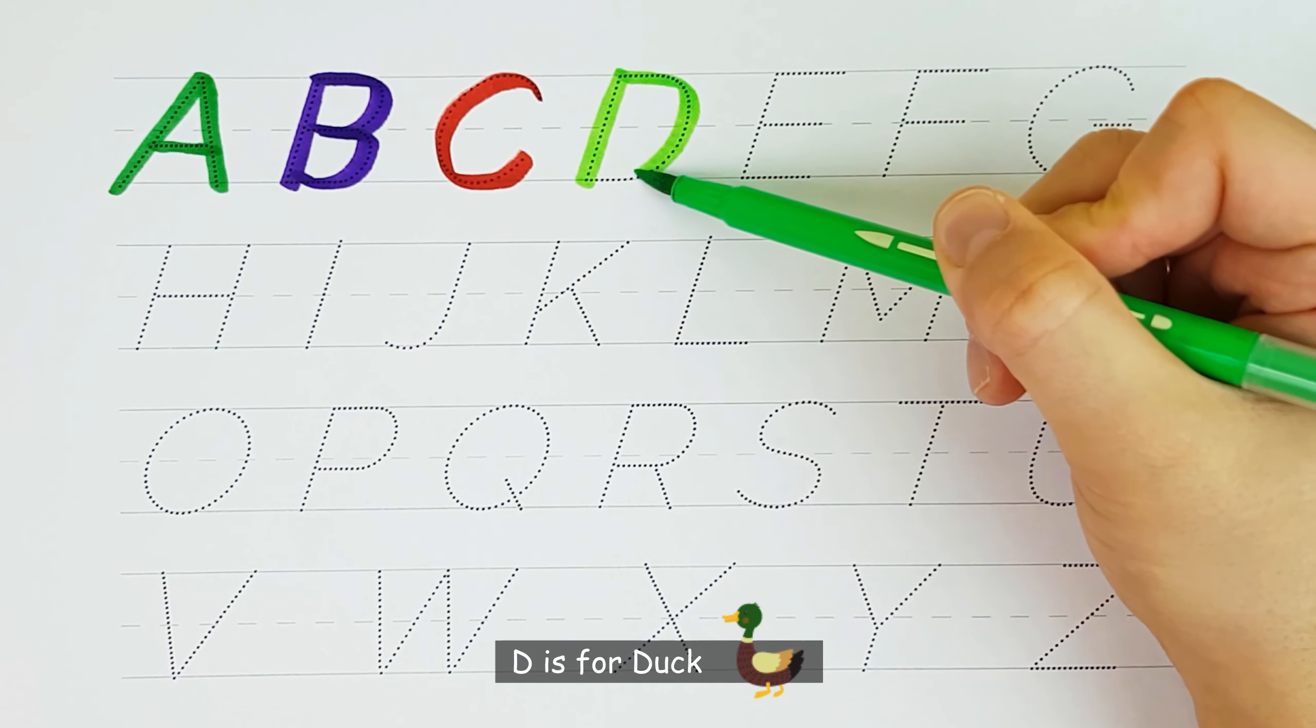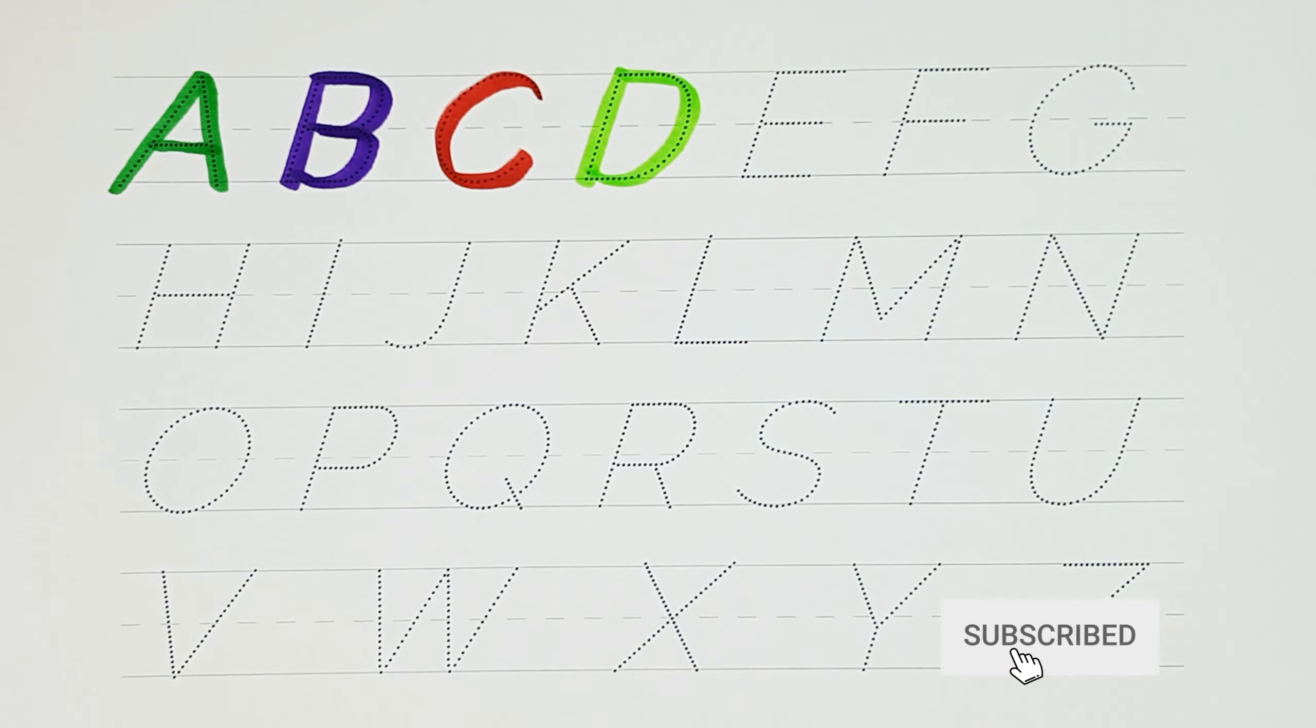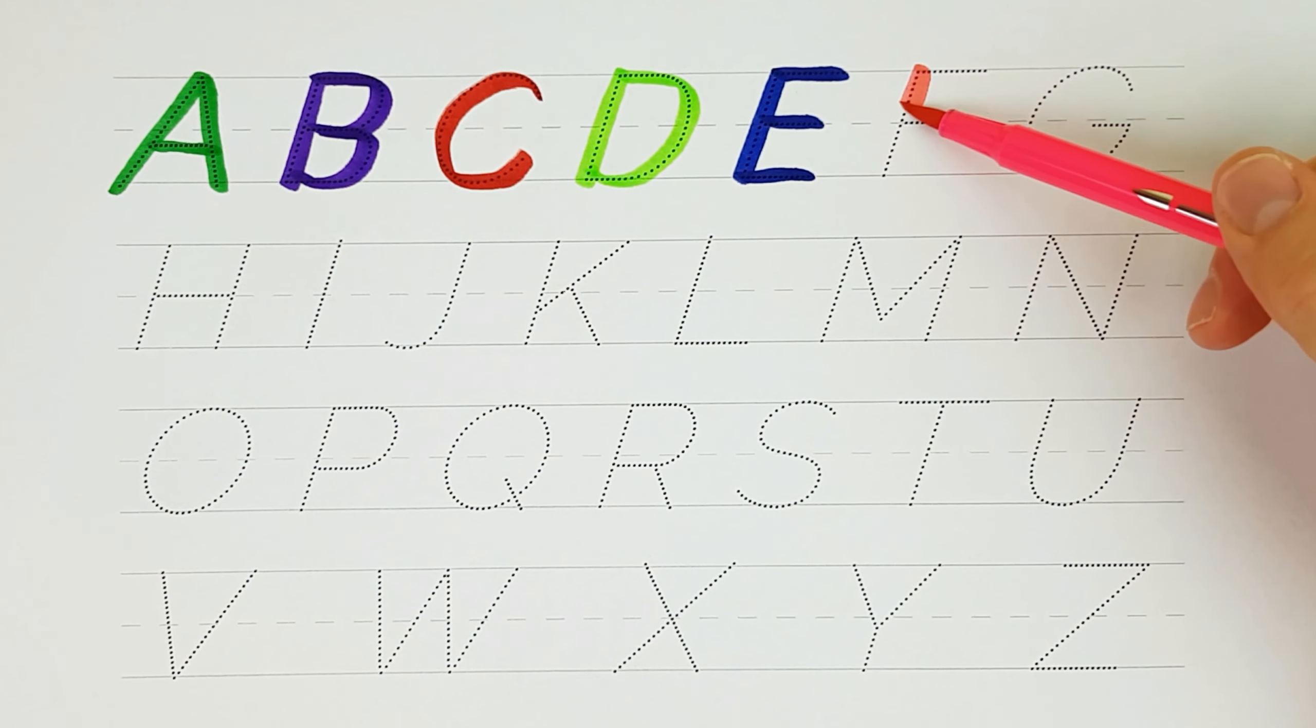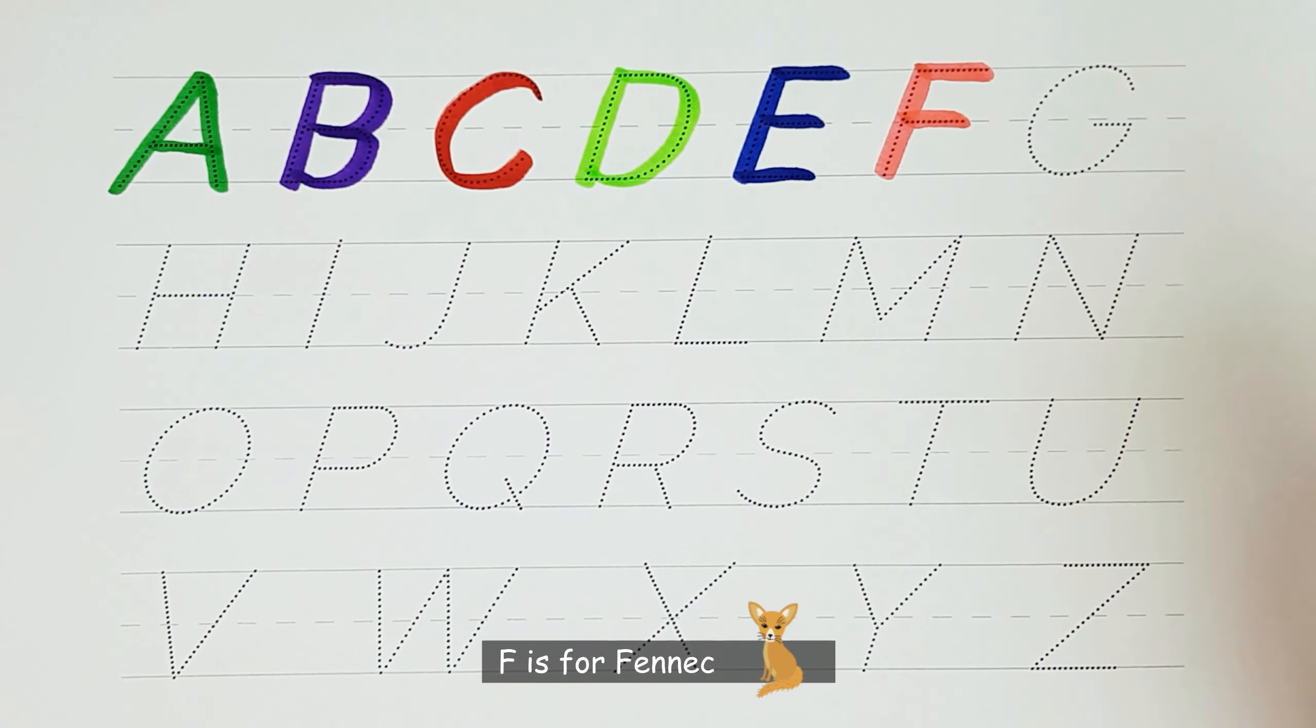D. D is for Duck. E. E is for Eagle. F. F is for Fennec.